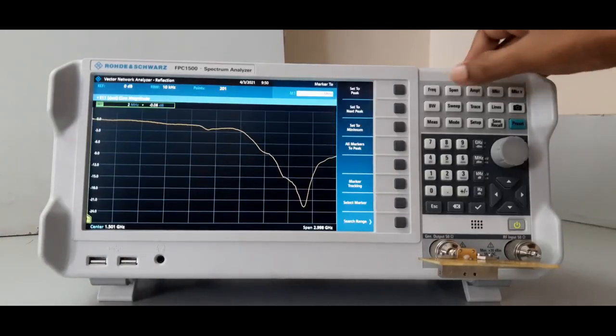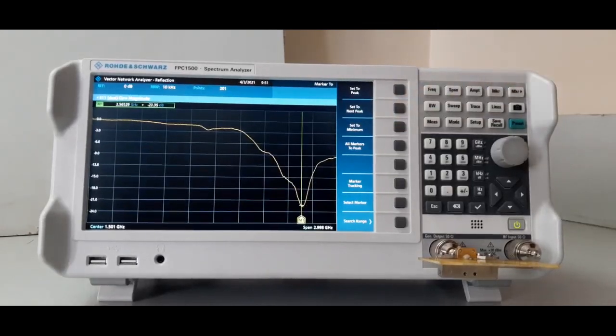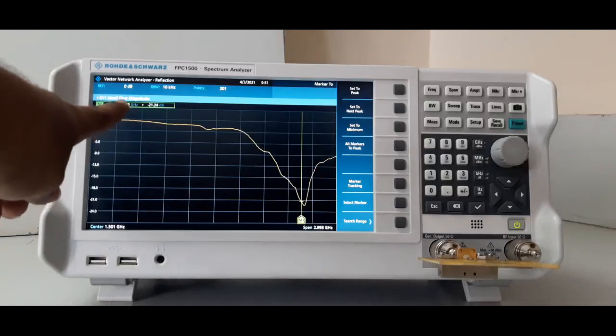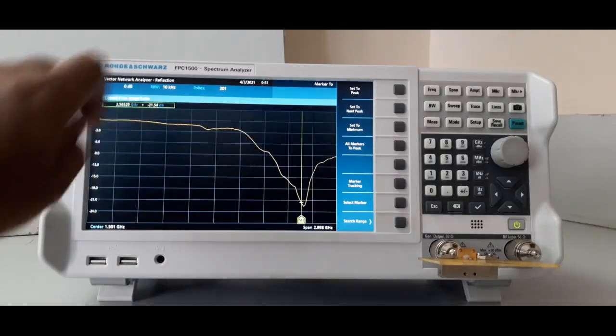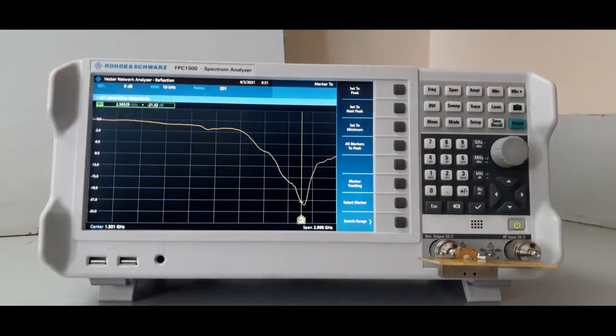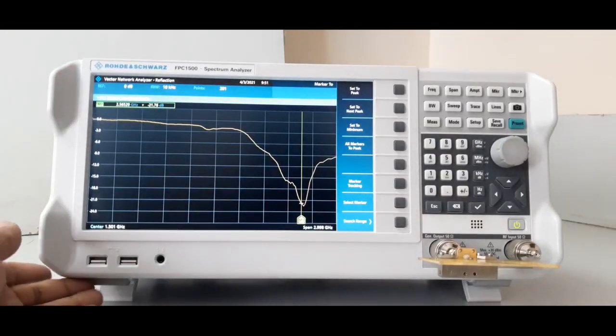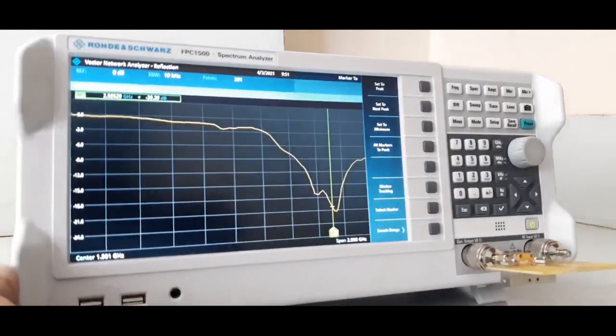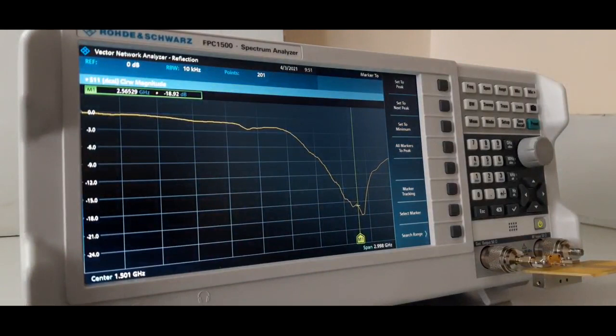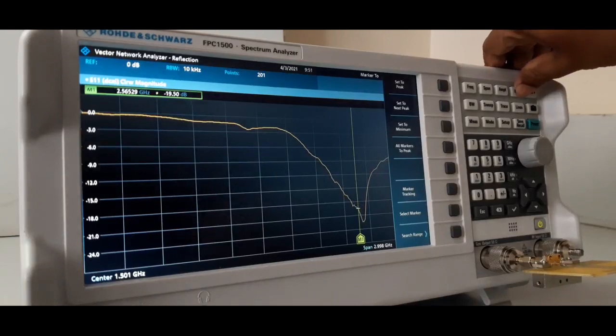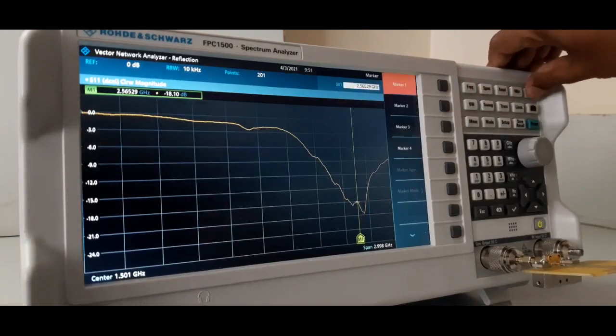Now I will select marker set to minimum, so that marker 1 is minus 2.56 gigahertz. We designed for 2.5 gigahertz - 2.56 gigahertz and minus 21 dB return loss. I will bring it closer. Then you can see the 2.56 gigahertz because I change the orientation.